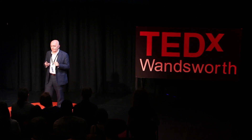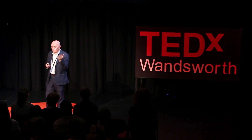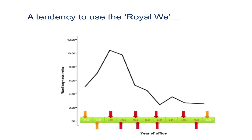Looking at Tony Blair's tendency to use the royal we throughout his career, as Owen and Davidson said, his hubris syndrome emerged quite early, and so did his increasing preference for we over I. This we-ness of his speech — what I call keyness — definitely coincided with the personality changes they described.